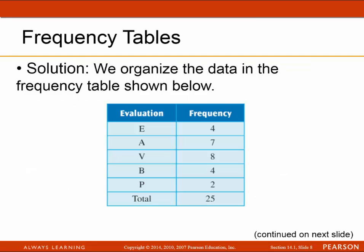Here we have the data organized in the table. If it's not organized, it's called raw data, and it's really difficult to get any information from raw data. The classes are E, A, V, B, and P, and the frequency shows how many times each occurs. The frequencies must add up to the total sample size of 25.